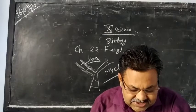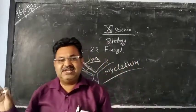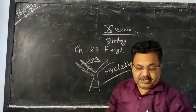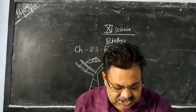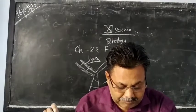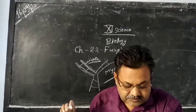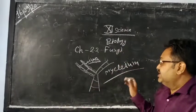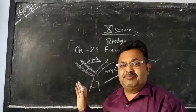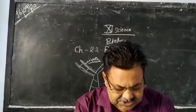Reproduction in fungi is both sexual and asexual. Vascular tissues are completely absent in fungi. The cells of fungi are eukaryotic in nature, meaning they have a well-developed nucleus and cell organelles bounded by a membrane.